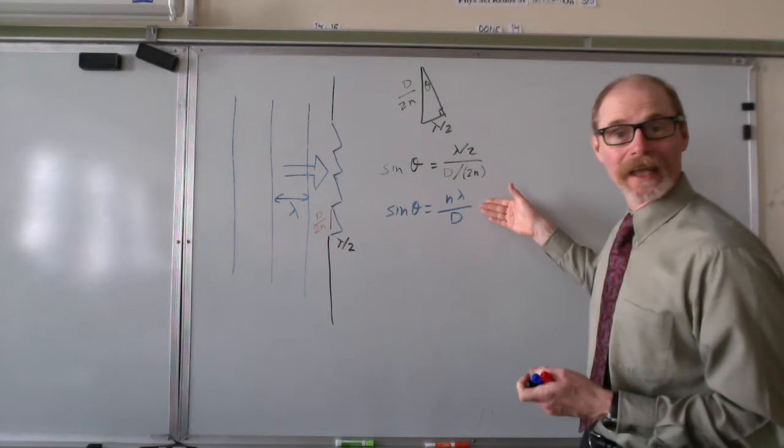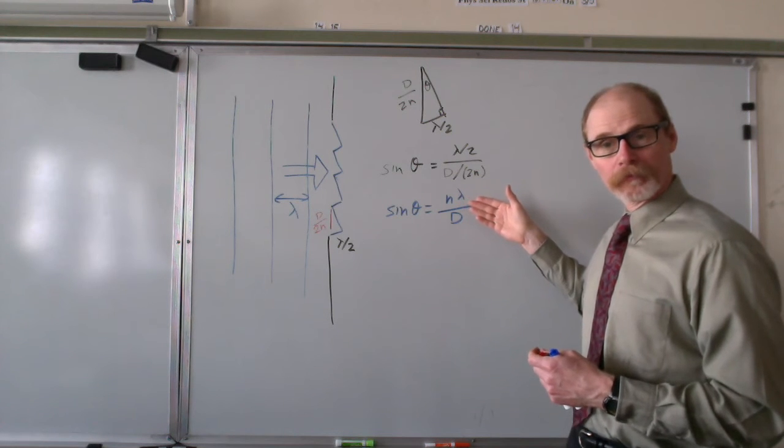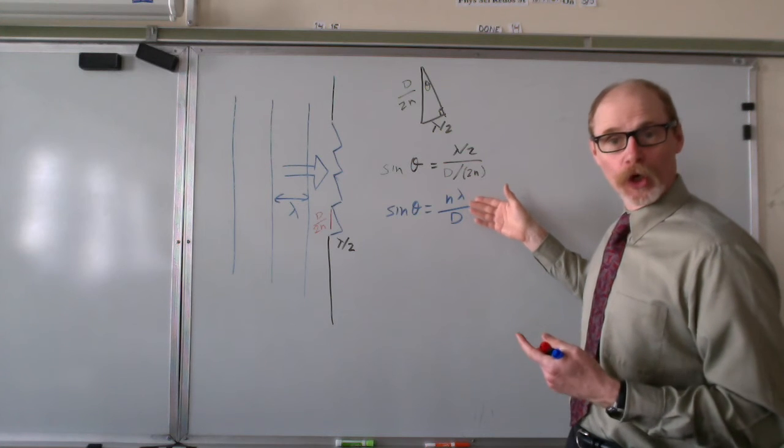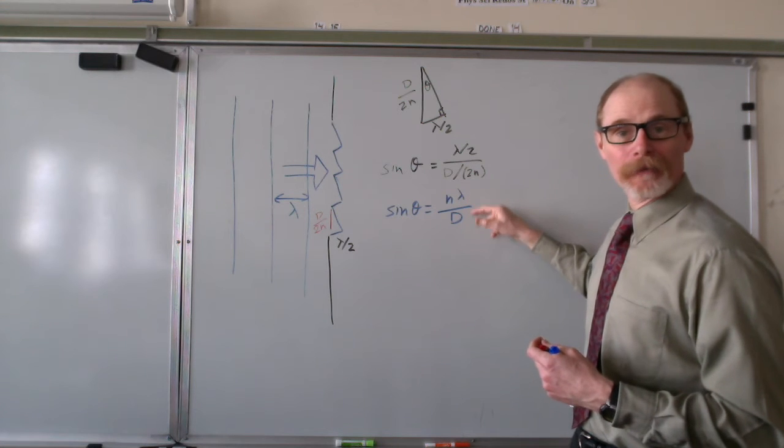To sine theta equals n lambda over d. So we will get the nth minimum, or the nth node, when the sine theta is n times lambda over d.